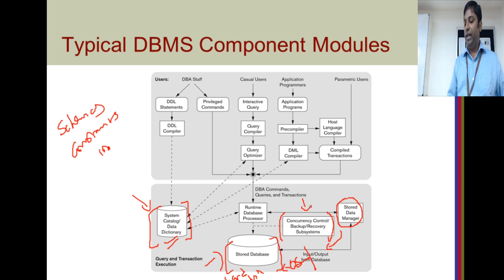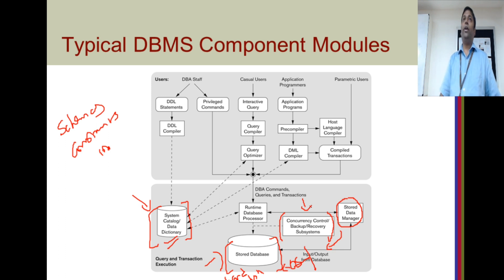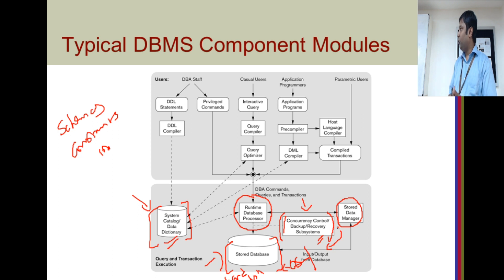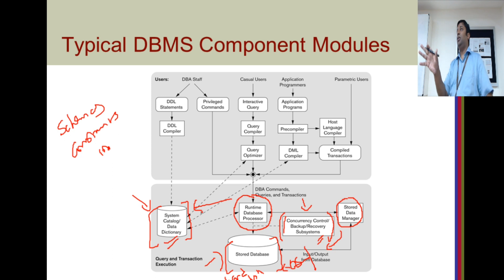You have the concurrency control and backup recovery system — this is where algorithms for maintaining concurrency reside. When many users want to access the same data item, there are protocols for locking and deciding which user to allow access. The runtime database processor is responsible for running queries on the database using all these modules — the data manager, concurrency and backup recovery module, and data dictionary. Before running a query, it checks the data dictionary for whether the table definition exists. If you try to access something not there, it returns 'table or view does not exist.'